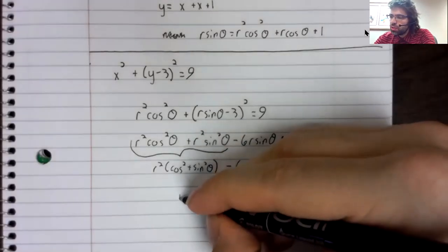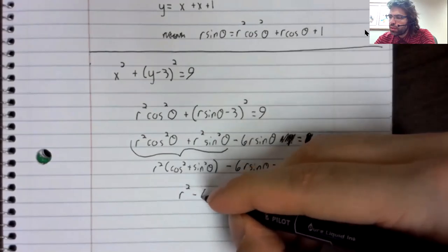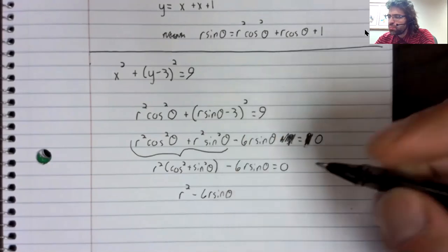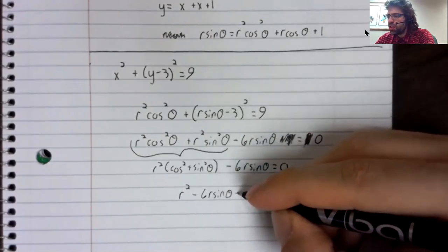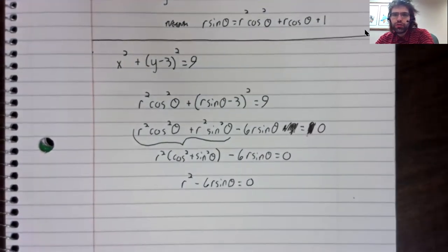So we just have r squared minus six r times the sine of theta equals zero.